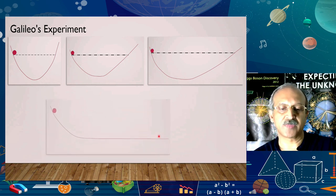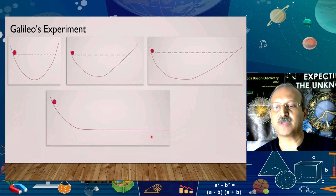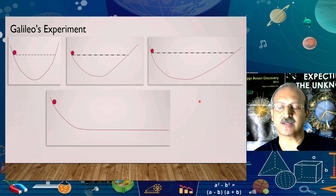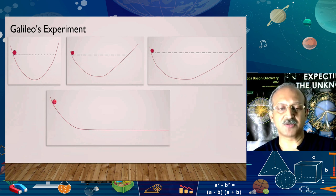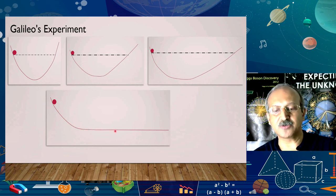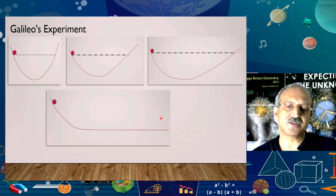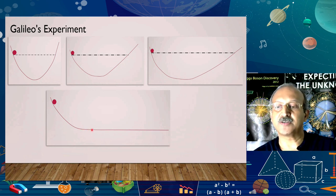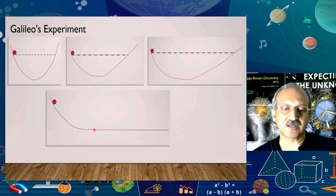He kept increasing the asymmetry of the shape, and each time the sphere would climb up to the same height. Naturally, if the second side was made flat, the body would continue to move — because its intention is to rise up to that height. The gravitational potential energy at the starting height converts into kinetic energy, and that kinetic energy continues as long as nothing obstructs it or converts it into another form.